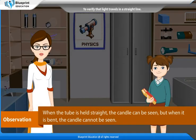Observation: When the tube is held straight, the candle can be seen. But when it is bent, the candle cannot be seen.